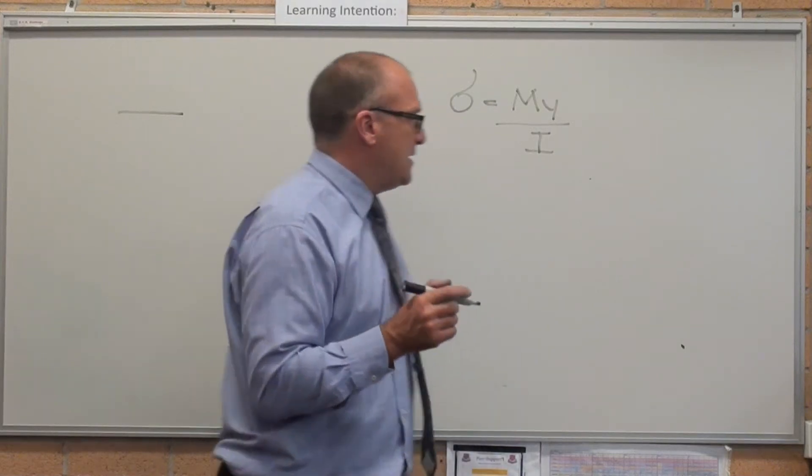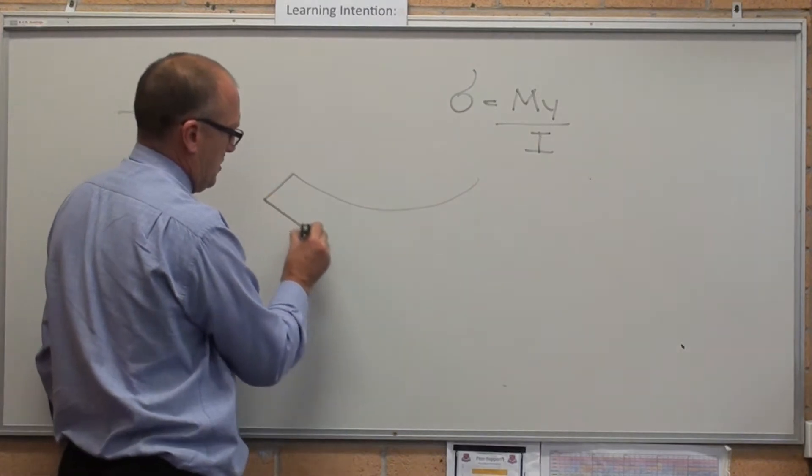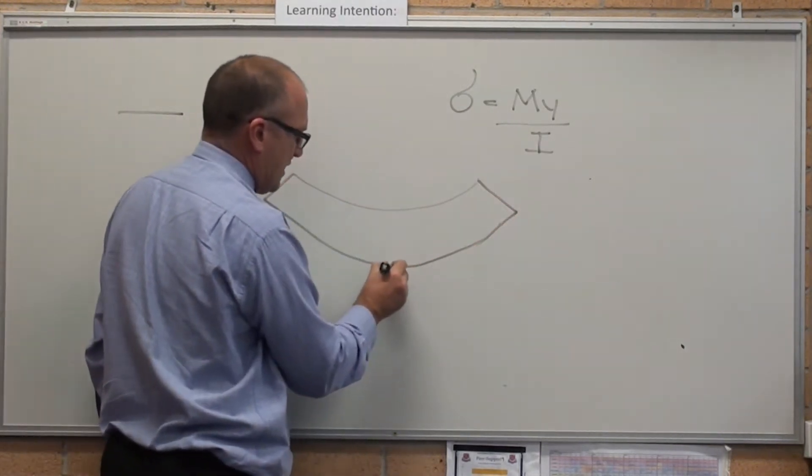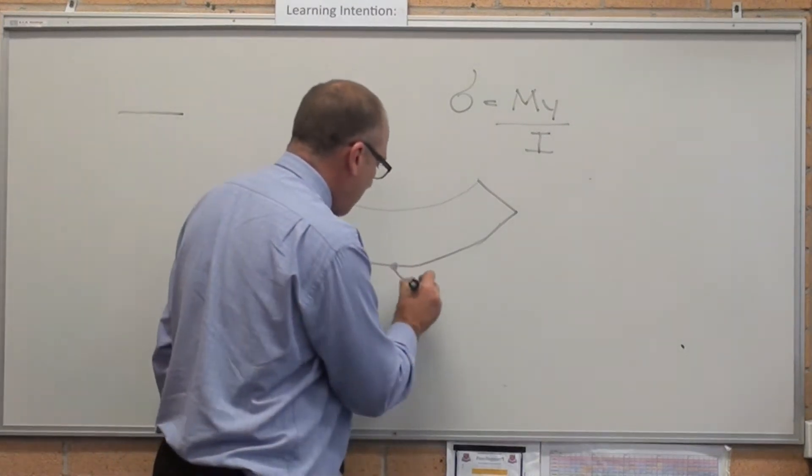What we're actually talking about is if you bend a beam, what is the stress on the outside of it? It's called the outer fiber stress.